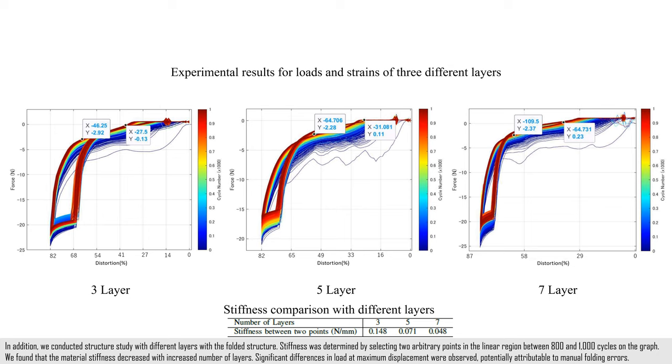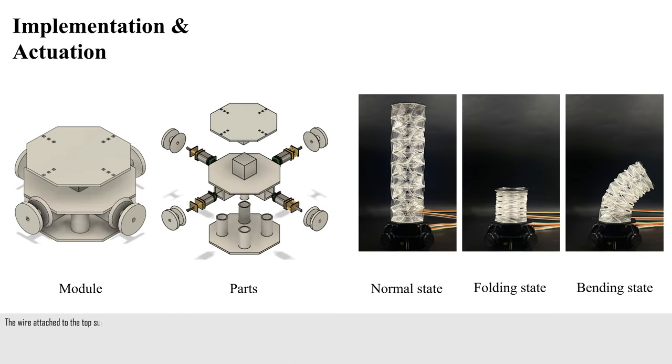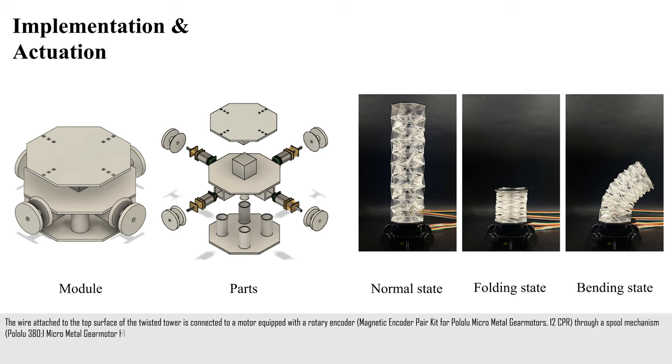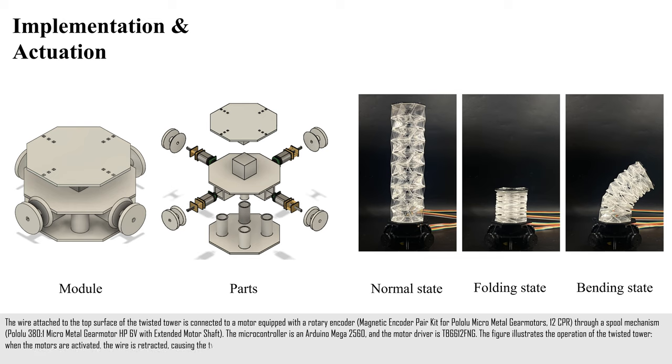The wire attached to the top surface of the twisted tower is connected to a motor equipped with a rotary encoder, magnetic encoder pair kit for Pololu Micro Metal Gear Motors, 12 CPR, through a spool mechanism, Pololu 380.1 Micro Metal Gear Motor HP 6V with extended motor shaft. The microcontroller is an Arduino Mega 2560, and the motor driver is TB6612FNG.